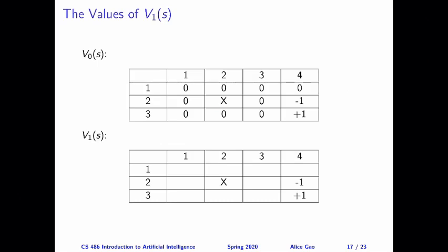If you want more practice questions, I've included an additional slide with an empty table for V sub 1 so you can fill it in. But this table is actually easy to fill in. The only state that will have a positive expected utility is S3,3 — we already calculated this. The reason is that S3,3 is the only state adjacent to the plus one state. For every other state, when we take one step we will not reach the plus one state, so the updated estimate is minus 0.04.